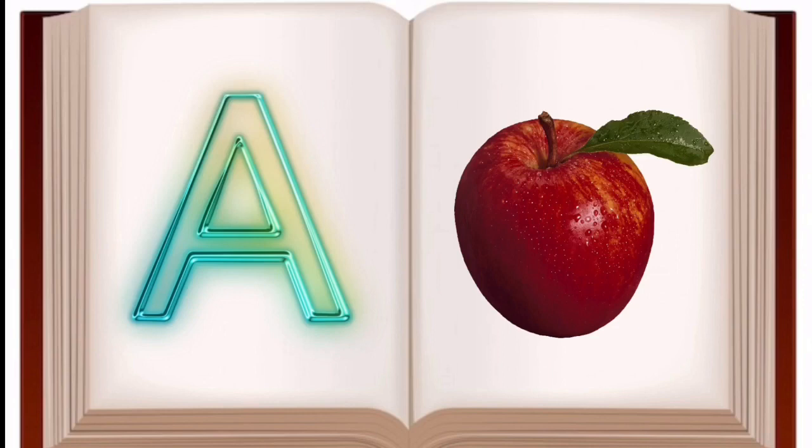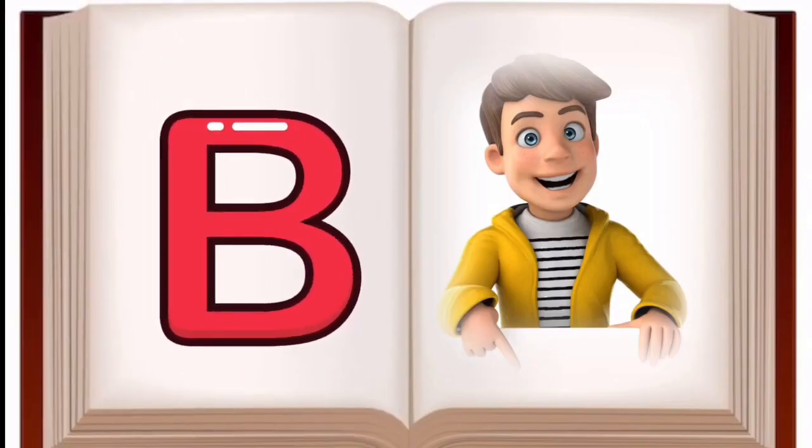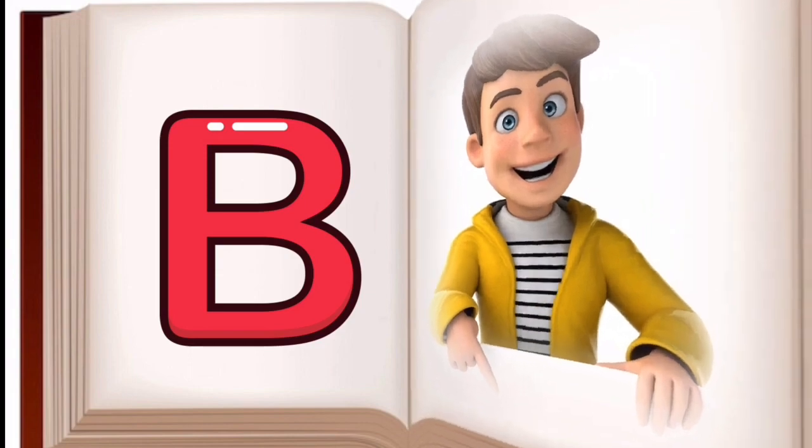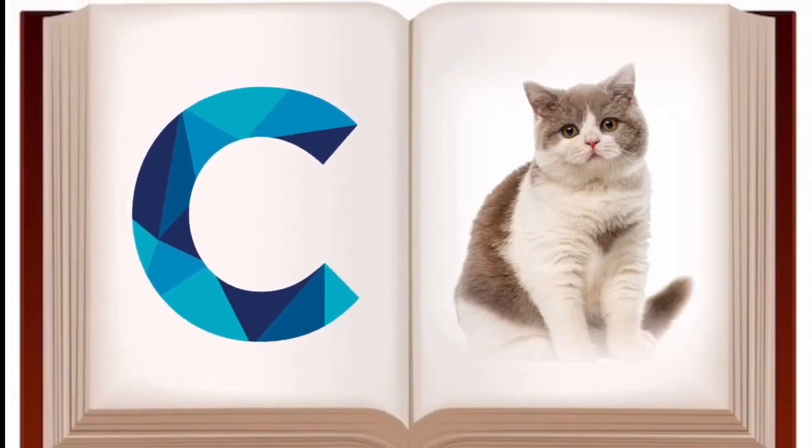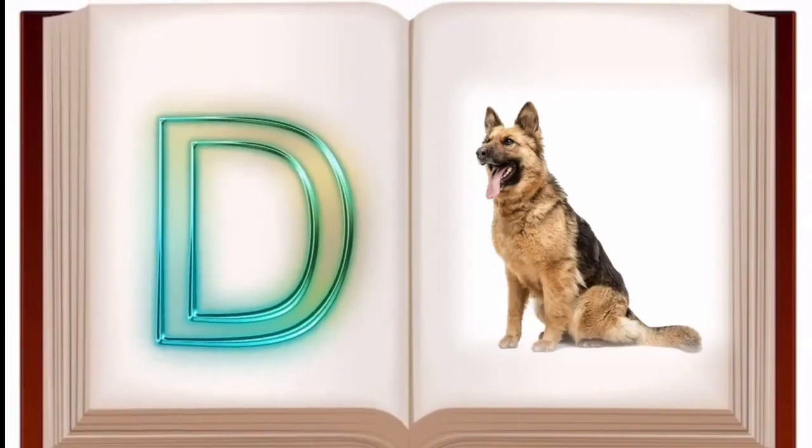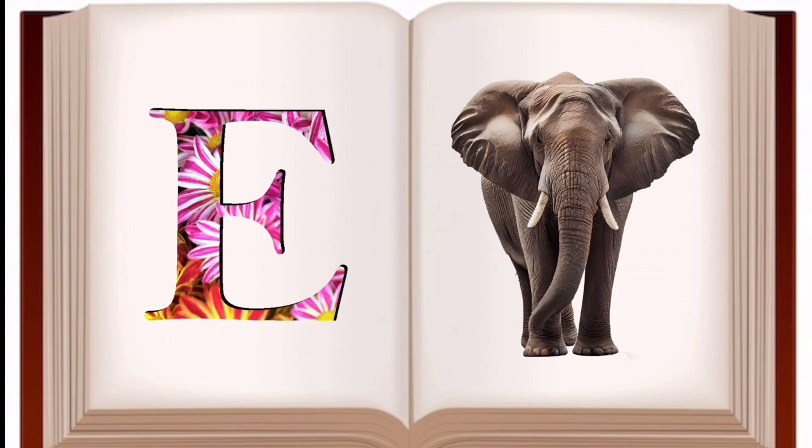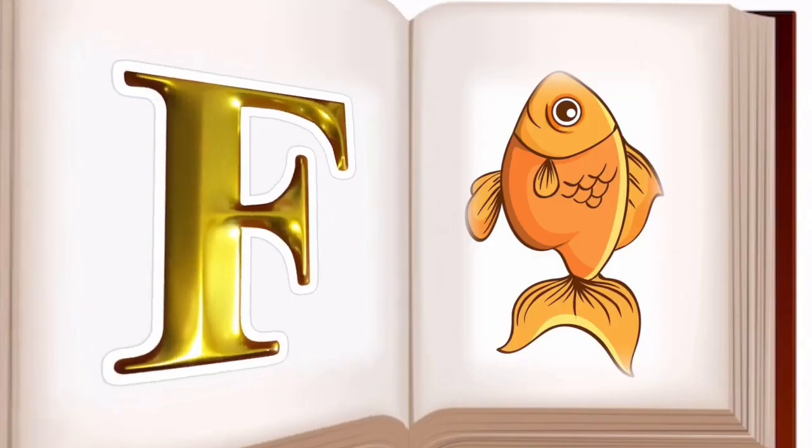A for apple, apple means save. B for boy, boy means ladka. C for cat, cat means willy. D for dog, dog means kut. E for elephant, elephant means hati.